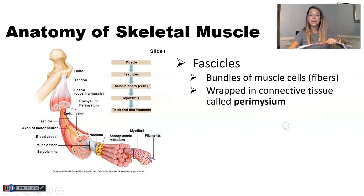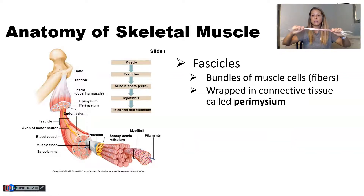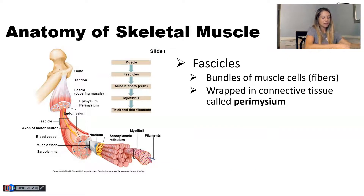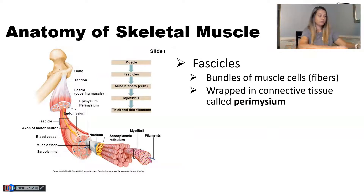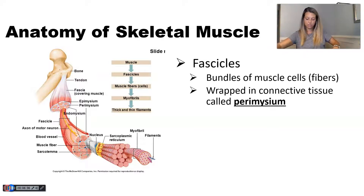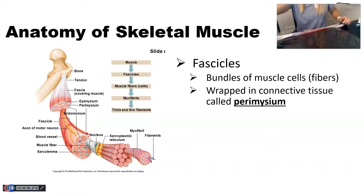A fascicle is a bundle of muscle cells or muscle fibers, and that bundle is wrapped in connective tissue. This is going to be our in-between layer of connective tissue — we call this perimysium. 'Peri' means covering or surrounding, so perimysium is covering the fascicle.